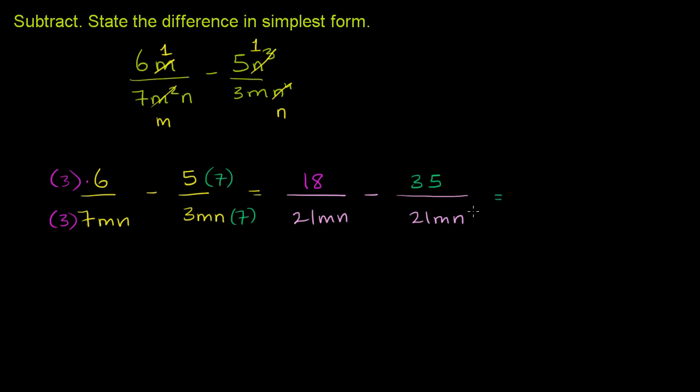And then this is going to be equal to 18 minus 35. We have a common denominator here of 21mn, and we're going to calculate 18 minus 35 in the numerator. 18 minus 35 is negative 17. So we get negative 17 over 21mn.